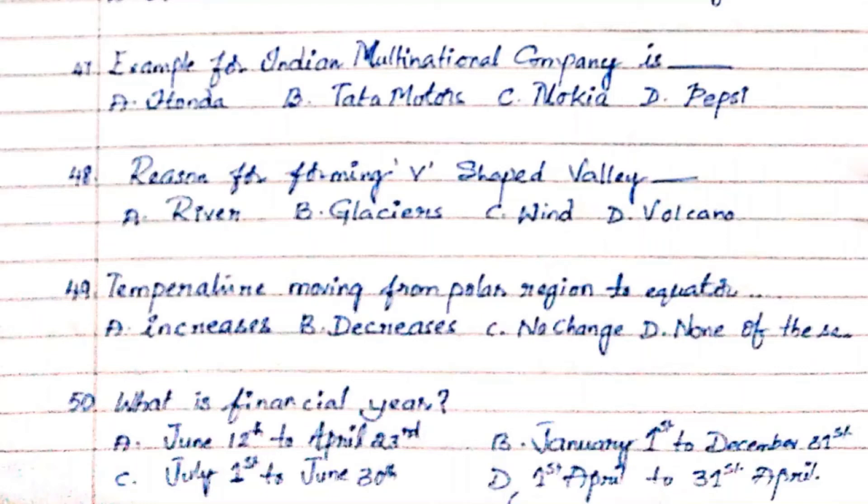Question 49: Temperature moving from polar region to equator. Option A. Increases, Option B. Decreases, Option C. No change, Option D. None of these. The answer is Option A. Increases.